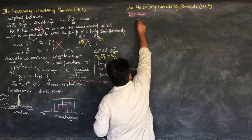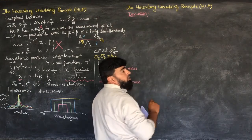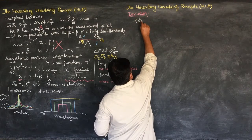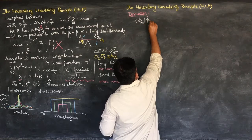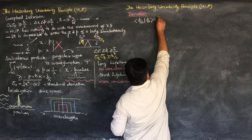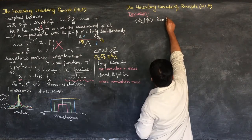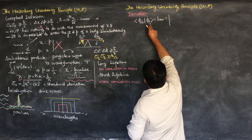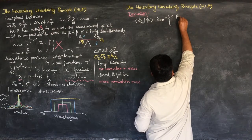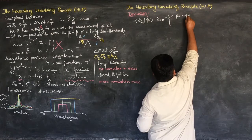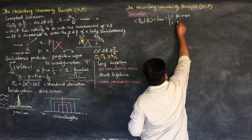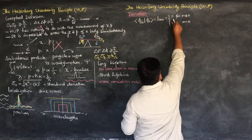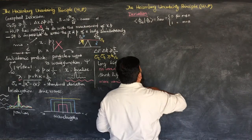We know that the orthonormality condition states that if we have normalized wave functions which form the basis of Hilbert space, then we can write ⟨φ_m|φ_n⟩ = δ_mn. So if m is not equal to n, we have 0, and this equals 1 for m equal to n.